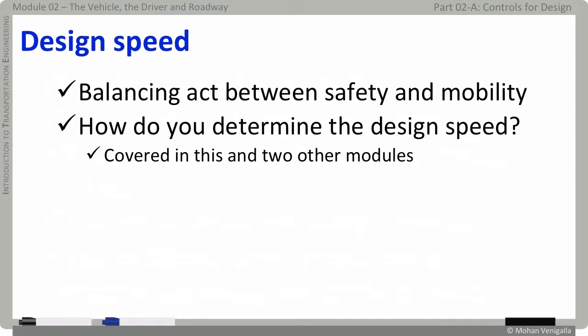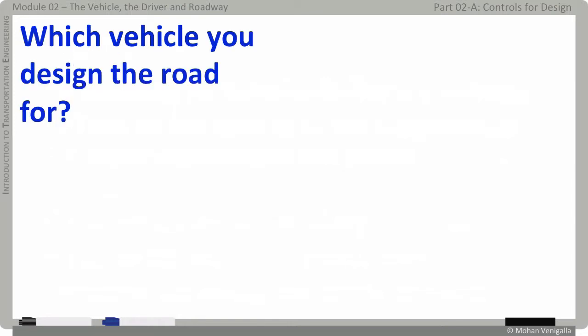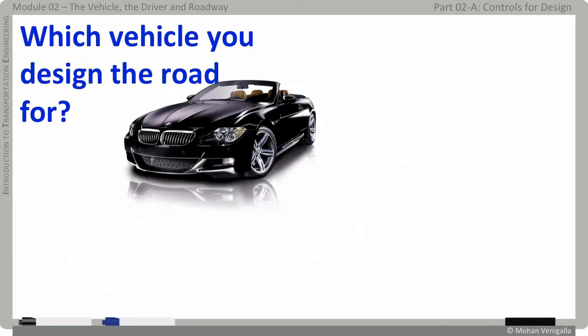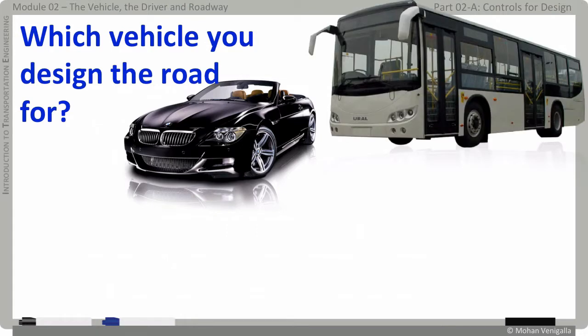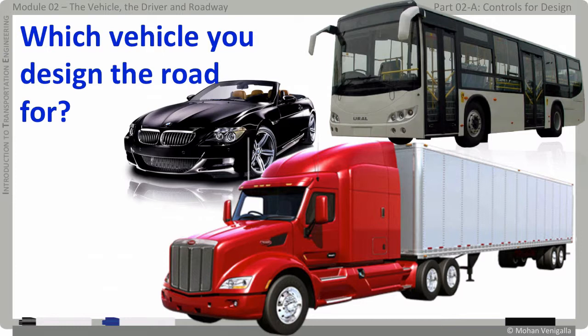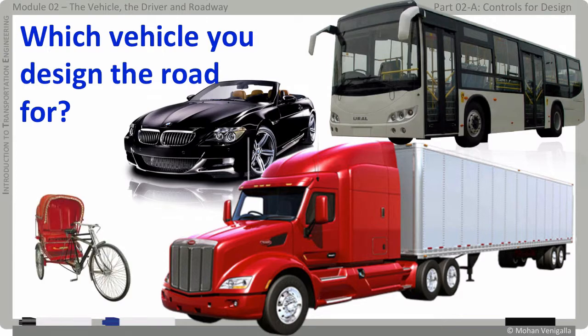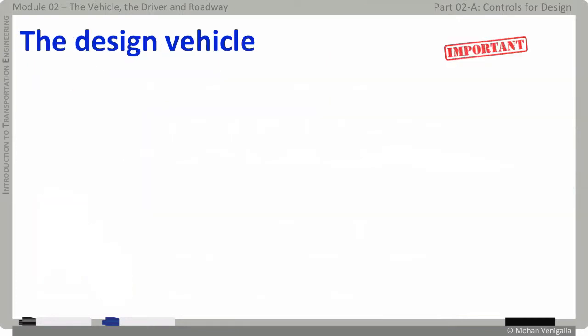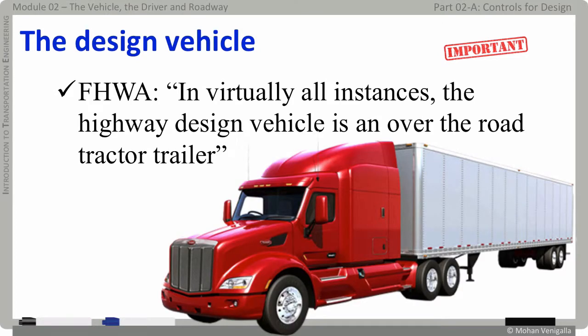By establishing the design speed on a highway, what we are essentially doing is a balancing act between safety and mobility. How do you determine the design speed? It's covered in this and two other modules. Which vehicle are you going to design the road for — in other words, what's your design vehicle? Is it an automobile because a vast majority of vehicles on the road are cars? Or a bus because it carries more people than a car? Or a tractor trailer because it needs special accommodations for maneuver? The winner is the largest vehicle that's likely to use the facility with considerable frequency — the tractor trailer. In virtually all instances, the highway design vehicle is an over-the-road tractor trailer.